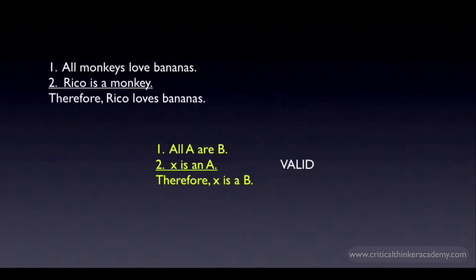Here, I want to point out that the A's and the B's in this argument don't refer to whole claims. They refer to categories or classes of things. In this example, A is the category of monkeys. B is the category of things that love bananas.